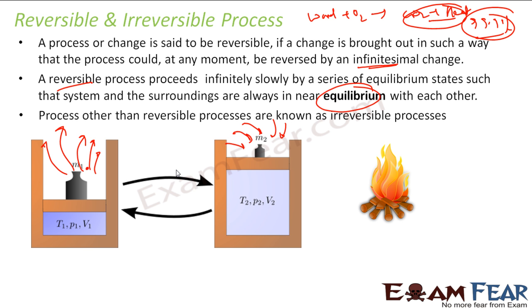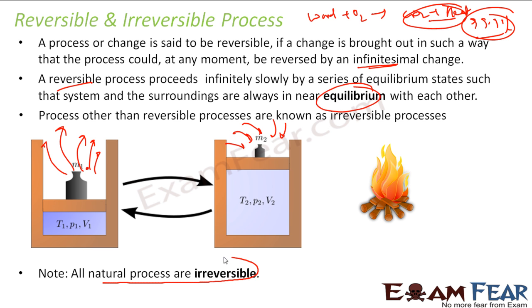All natural processes are irreversible. For example, burning wood is an irreversible process — if you have carbon dioxide and heat, you cannot get the wood back.